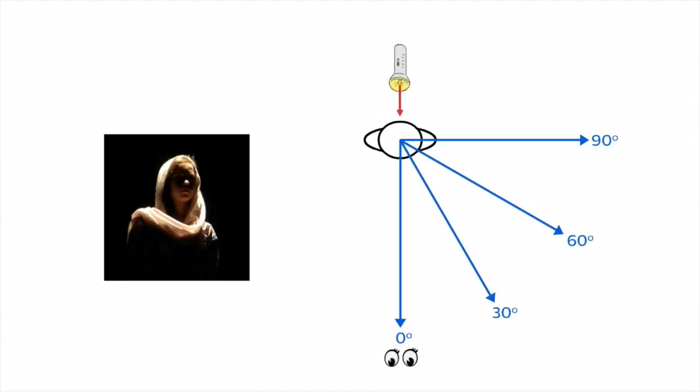A third light can be added from behind the subject called the backlight. This creates a halo around the subject which helps to separate it from the background. It can be used on its own to create very dramatic images, often leaving the observer to fill in the detail with their own imagination.